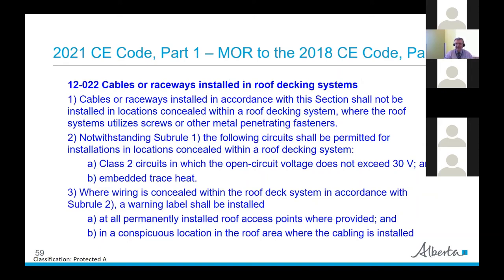There's also a new section on roof decking, addressing the problem of roofs being installed and drilling through conduits and wires. Cables or raceways installed in accordance with this section shall not be installed in locations concealed within a roof decking system where the roof system will utilize screws or other metal penetrating fasteners. Exceptions permit Class 2 circuits and embedded trace heating. Where wiring is concealed within the roof deck system per the exception, a warning label shall be installed.